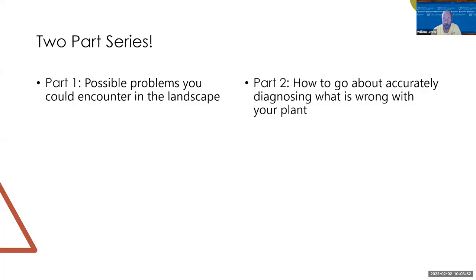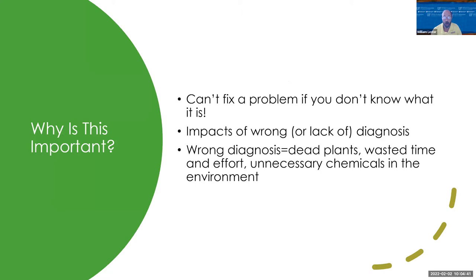Today we're talking about diagnosing plant problems, and this is part two of a two-part series. Part one, we talked about all the different possible problems that you could encounter in your landscape — flowers and landscape plants, vegetable garden, trees, lawns, whatever it may be. This covers everything that may be growing on your property. Today we're going to look at all those different areas a little bit deeper and share how to get an accurate diagnosis about what exactly is wrong with your plant. I'm going to share a lot of tips and tricks and cover things we see most often in our office.